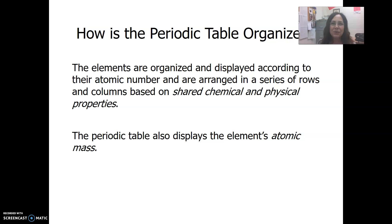How is the periodic table organized? The elements are organized and displayed according to their atomic number. They're arranged in columns based on shared chemical and physical properties. The columns include elements that have similar chemical and physical properties. The periodic table also displays the elements' atomic mass. If you want to convert that to the mass number, you just round it.